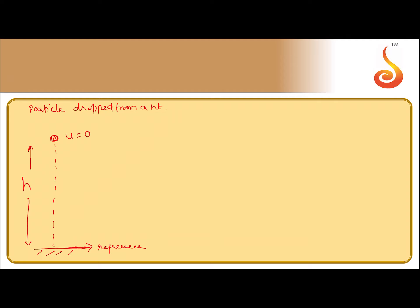So this is the reference level. At the point of striking, the velocity is in the downward direction when it is just about to hit the ground. Now let us write the sign convention: u is 0, so no sign convention applies to that. What about v? v is in the downward direction, therefore I take it with a negative sign. Displacement h, the final position minus initial position, is in the downward direction, so displacement is taken with a negative sign. Acceleration due to gravity g is always in the downward direction and therefore it is negative. Whenever you write the equations of motion, you should substitute these quantities along with their respective signs.